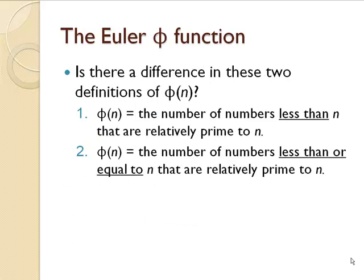Is there a difference between these two definitions of phi of n? One says that phi is the number of numbers less than n that are relatively prime to n. Another definition that you may find is the number of numbers less than or equal to n that are relatively prime to n. What do you think?